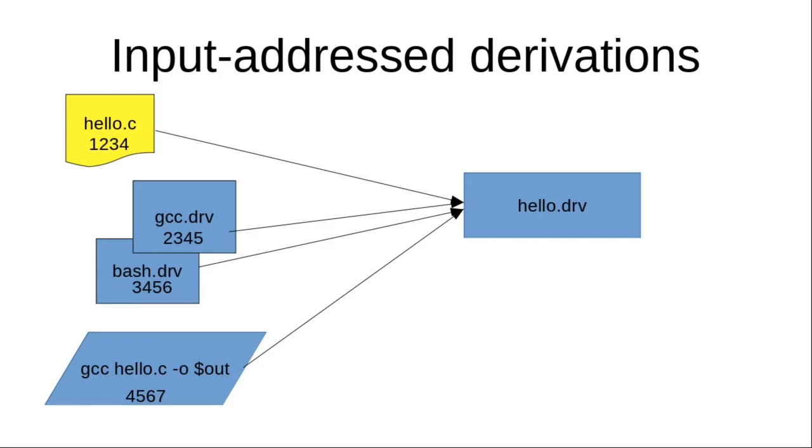All these inputs will be assigned a hash, and then Nix will take all of these hashes, put them in a box, shake the box and hash the result. This is going to be the hash of the hello derivation, and from this hash Nix will be able to compute the different output paths of the derivation.